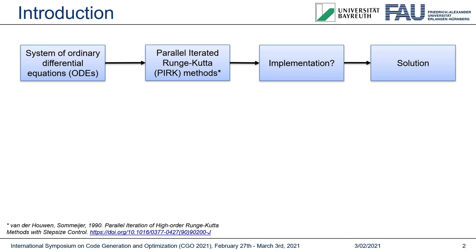PERC Methods use a four-dimensional loop structure, which allows deriving a large implementation space to select the best implementation from. The question remains which implementation performs best. A straightforward implementation could, for instance, split all computations into separate, non-overlapping loop kernels, as shown here.